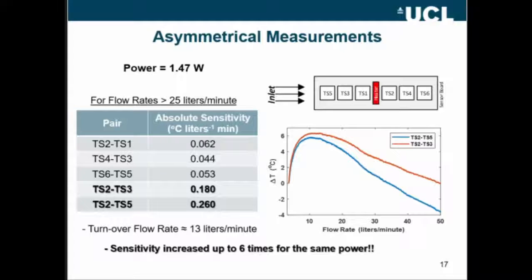You could see straight away that the sensitivity now for flow rates over than 25 liters per minute goes to 0.18, 0.26, that's up to six times larger sensitivity compared to symmetrical measurements.